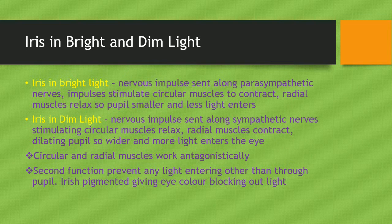In bright light a nervous impulse is sent along parasympathetic nerves, and these impulses stimulate the circular muscles to contract. The radial muscles then relax, so the pupil becomes smaller and less light enters the eye.